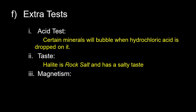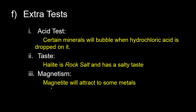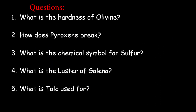Halite is a food additive with cubic cleavage and a salty taste — please don't eat it in the lab. Next, magnetism: certain minerals will attract to a magnet. Magnetite is a metallic mineral with a black streak, and it is magnetic — it is an ore of iron. Those are just some extra tests that may help you identify your minerals.